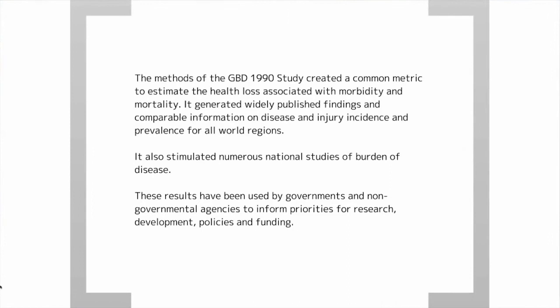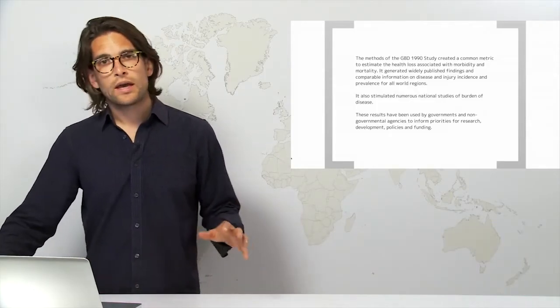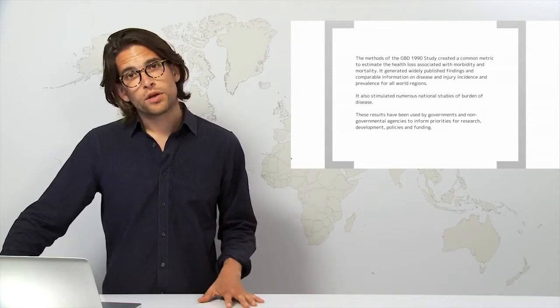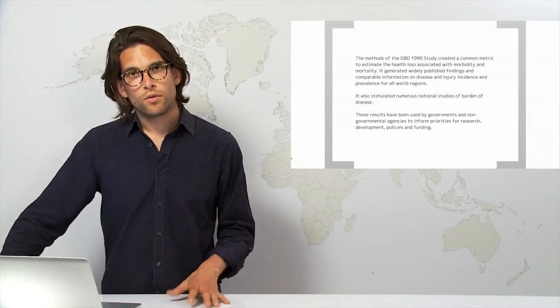The methods of the GBD 1990 study created a common metric to estimate the health loss associated with morbidity and mortality globally. It generated widely published findings and comparable information on disease and injury indices and also gave us a snapshot of incidence and prevalence for diseases around the world's regions.